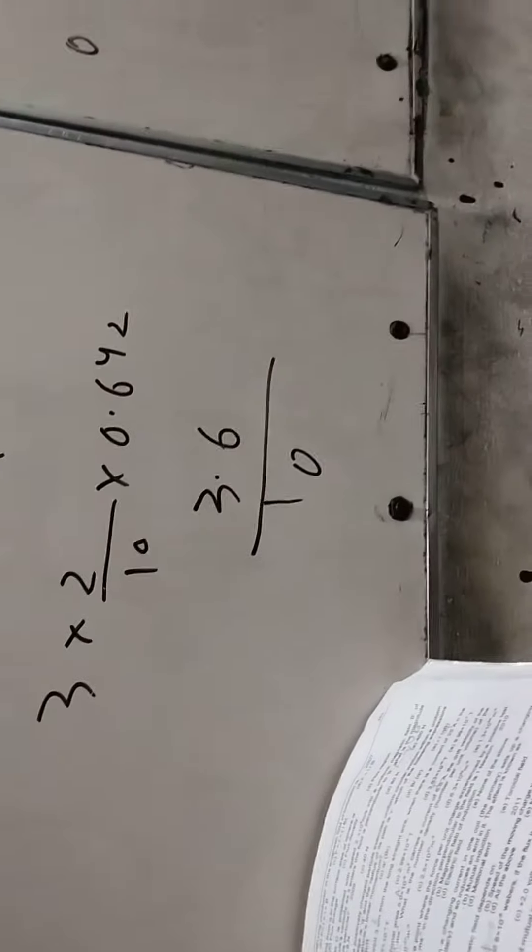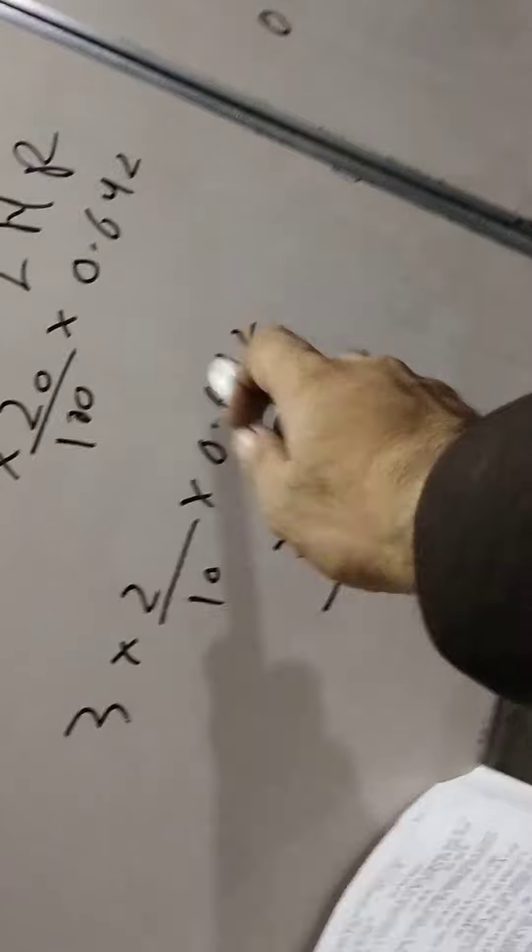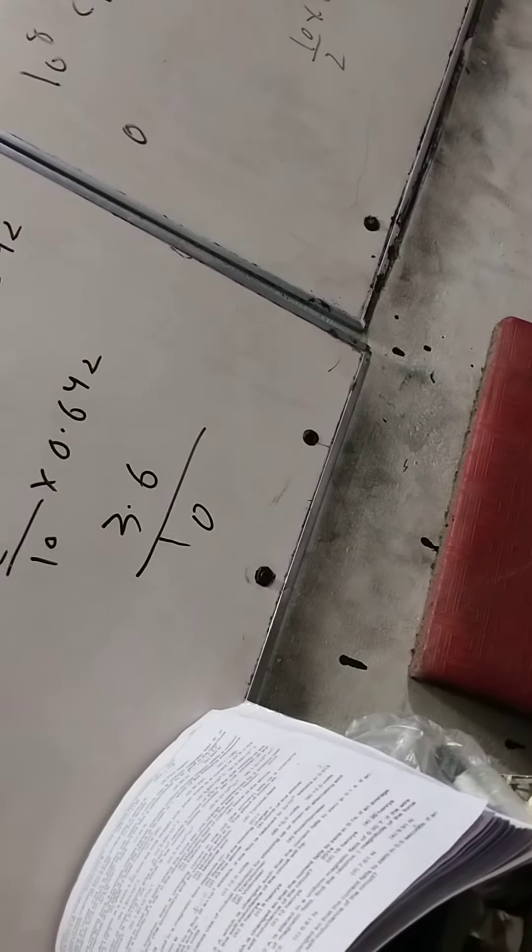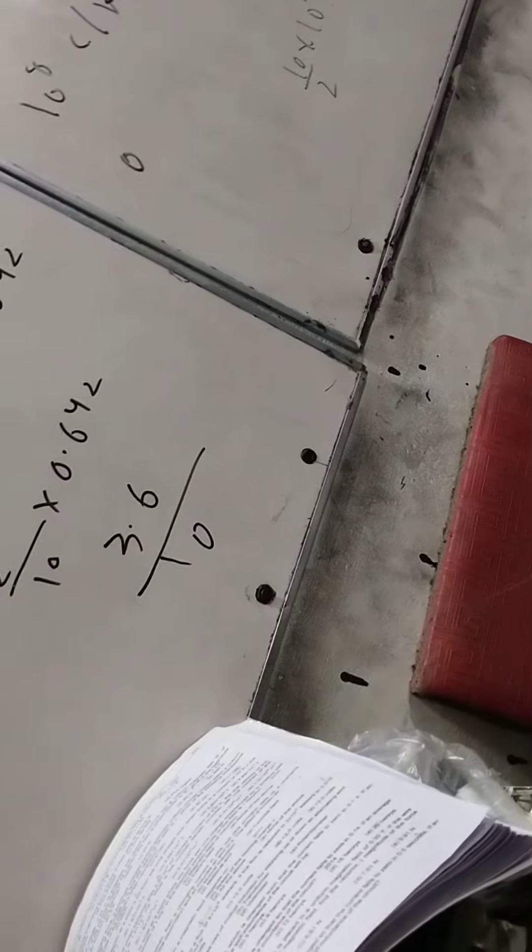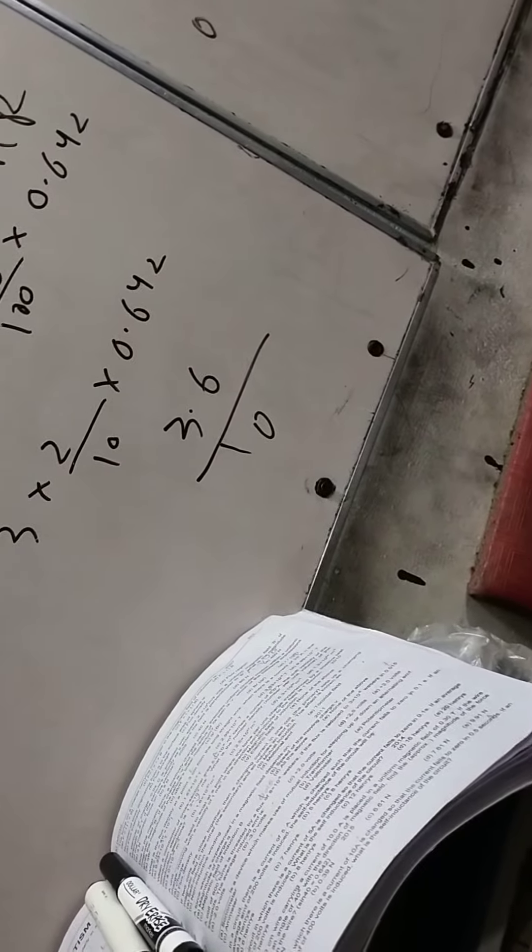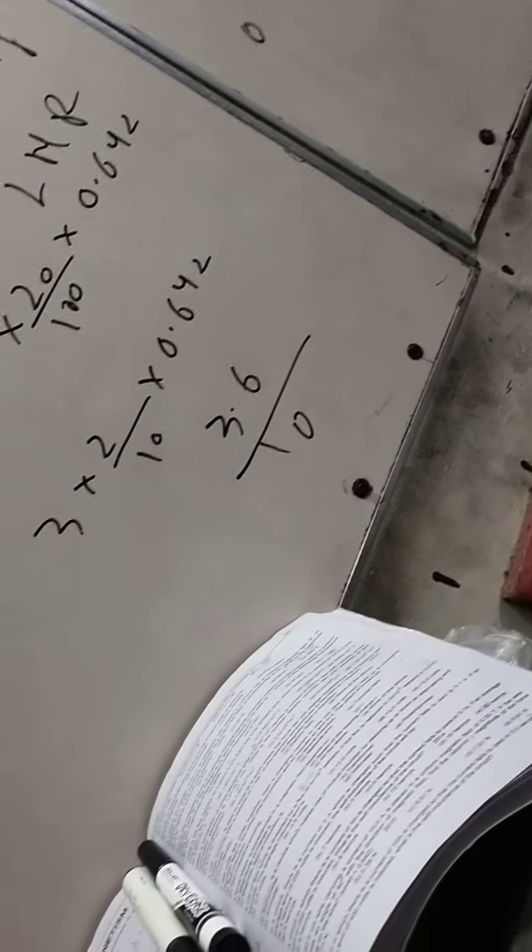Aur waise bata hai 3.6 ho, 10 se divide karna hai ya 3.6 accurate nahi, kyunki 0.6 hi jaha 0.64 toh hai kya hota, 3.7, 3.8, 3.9 kuch aisa hai, 3.6 se bada. Toh answer kuch 0.37, 38, 39 ke aaspaas aega, ek hi option hai, answer yeh chahiye.